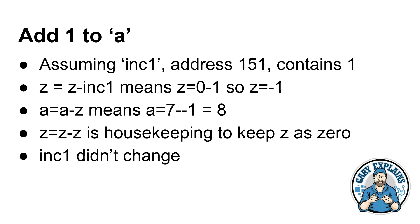What happens if we want to add one to a number? Let's say we want to add one to that seven that is in address 100, in A. To do that, we need a constant in memory, which we're going to call inc1, and we could put that in address 151, and it's going to contain one. What you say is this: Z equals Z minus inc1. We know that Z is zero, it's always zero, minus inc1 means that Z equals minus one. Now we say A equals A minus Z. We're doing all minuses because this processor can only take away two numbers. So A equals A minus Z means A equals seven minus minus one, which gives us eight. Then we do Z equals Z minus Z for housekeeping to return Z to zero. Notice the inc1 doesn't change, it's just used there as a constant.